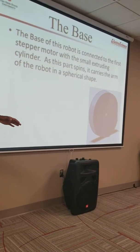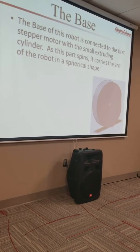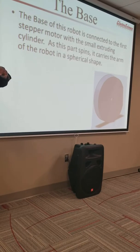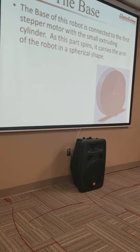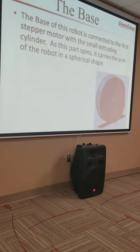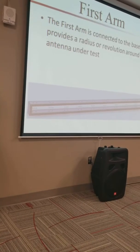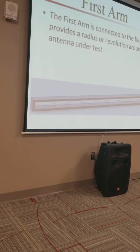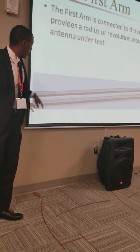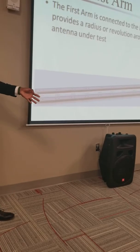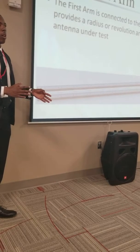The first part of the robot is the base, where everything starts. I made the base circular because it needs to support a circular, sphere-shaped movement. This is what carries the robot in the spherical pattern. The first arm connects to the base and provides the radius of the sphere revolving around the antenna. There are different holes located along this arm from five centimeters to about fifty centimeters, allowing adjustment of how far we take measurements from the antenna.